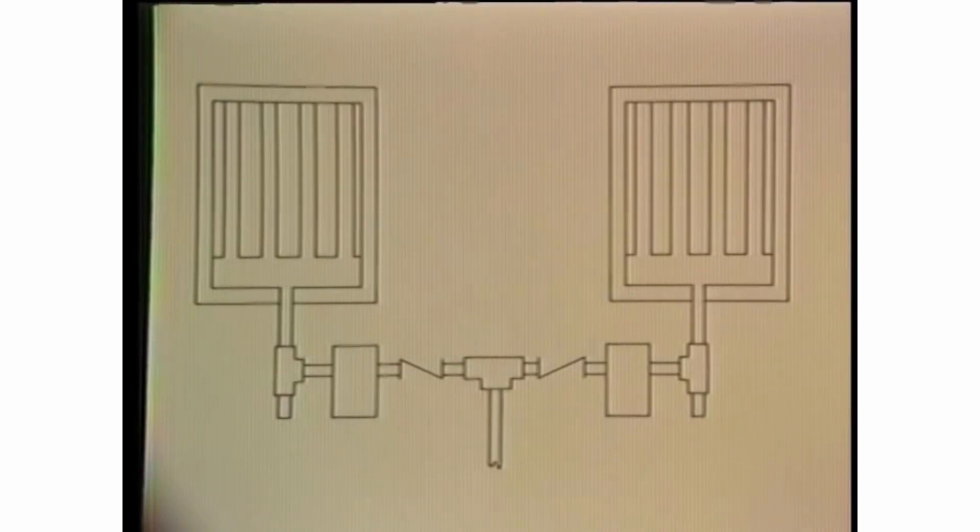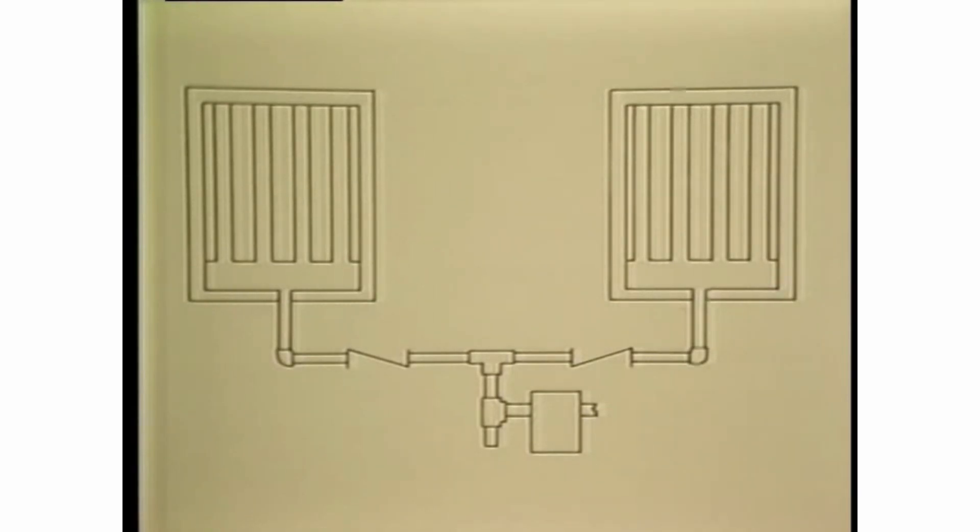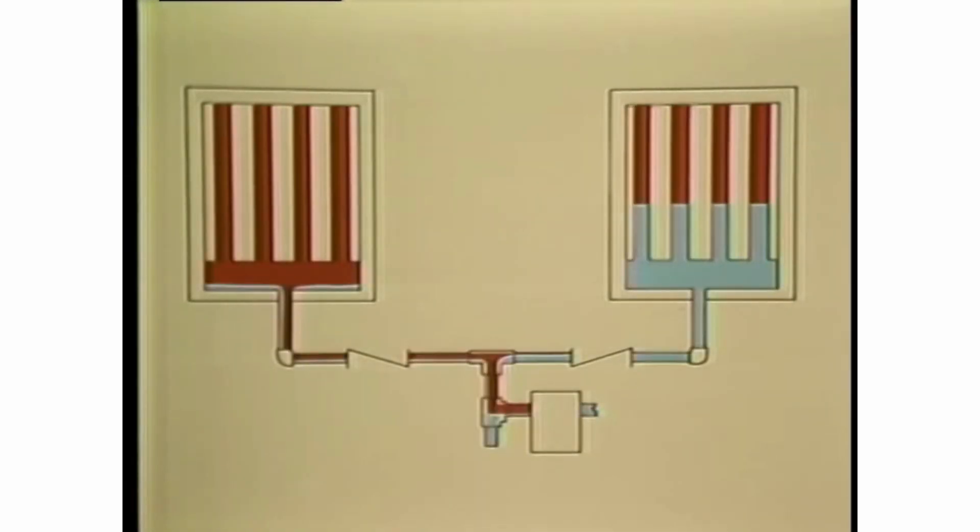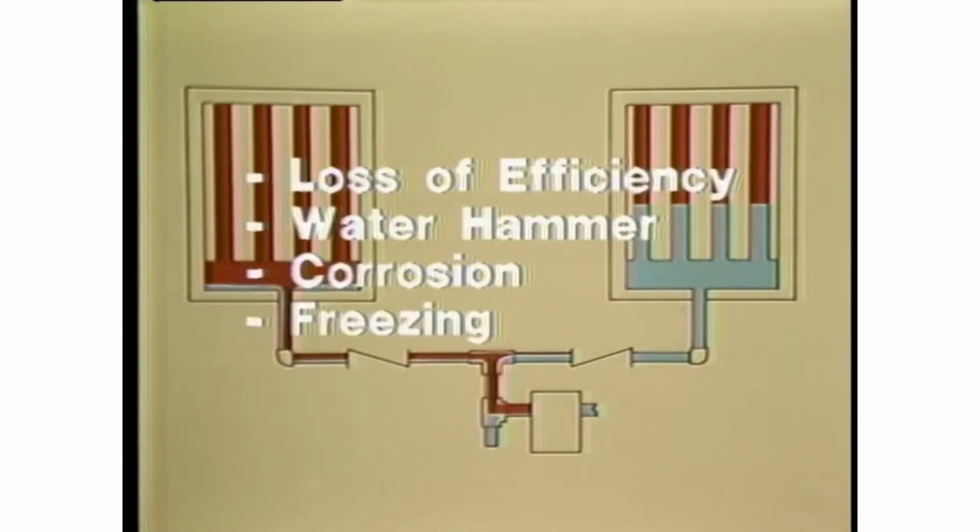Each piece of heat exchange equipment must have its own steam trap. Group trapping, the removal of condensate from several heat exchangers through a single trap, can cause backflow of condensate and air into the heat exchanger with the greatest pressure drop. Even with a check valve to prevent backflow through the trap, condensate can accumulate because steam is still condensing in the heat exchanger. The results of group trapping can be loss of efficiency, water hammer, corrosion, and damage from freezing.